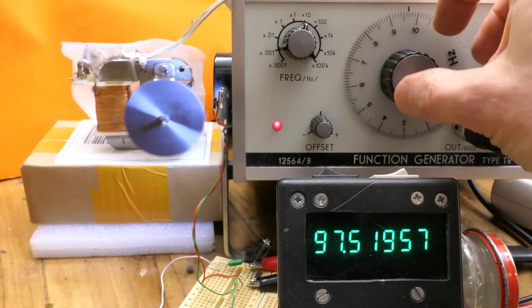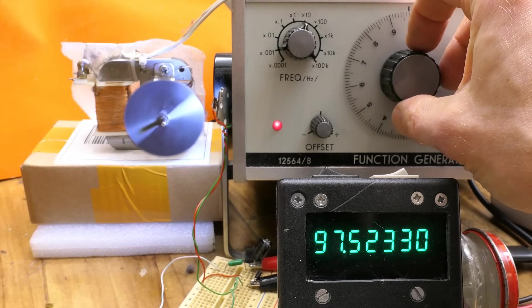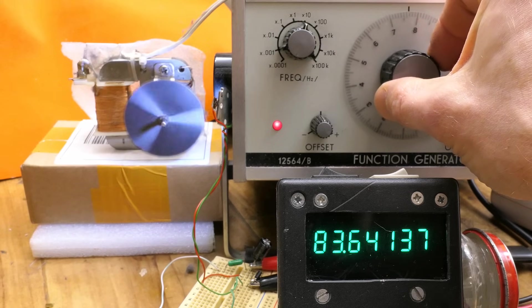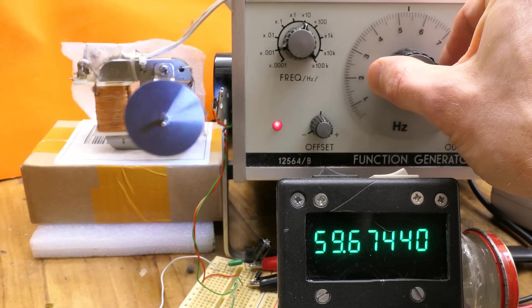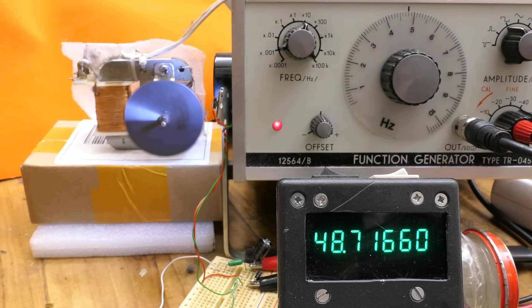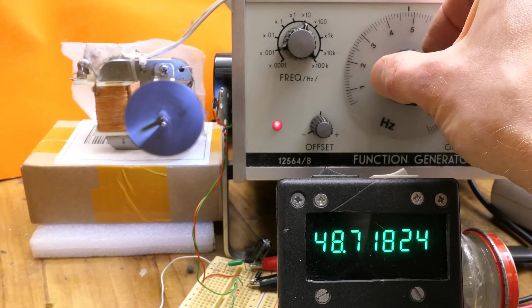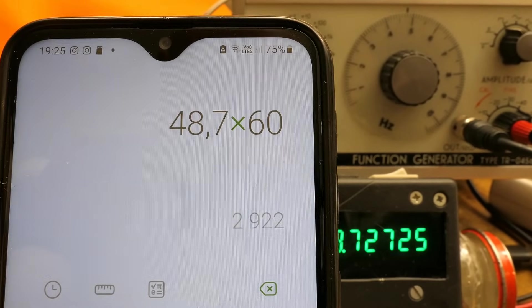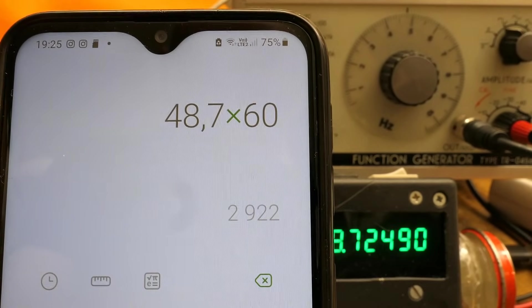Now let's try another motor. You can see two marks or notches. Let's go down with the frequency until I can see just one. It's almost stationary and it reads 48.7 hertz times 60 means 2922 rpm.